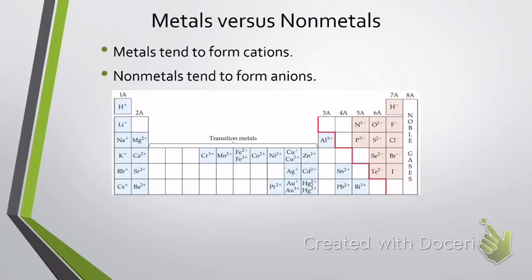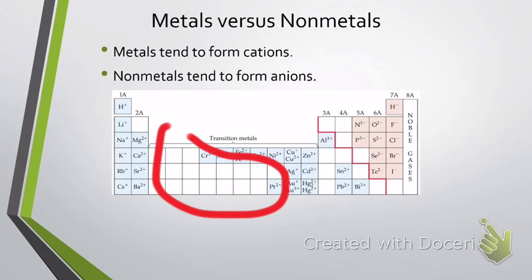This is just an illustration of the periodic table showing some of the prominent cations and anions formed by each of these elements. This is not all-inclusive, because there are many transition metals that also form cations. However, it's showing you some of the more important and common ones that you see.